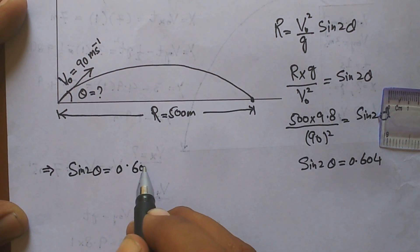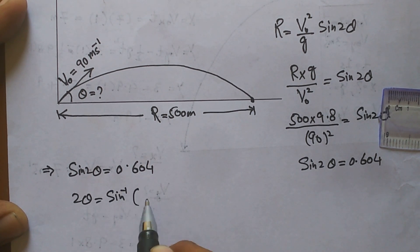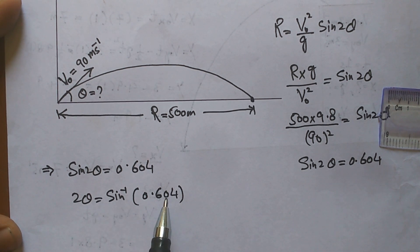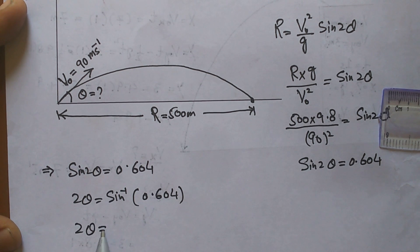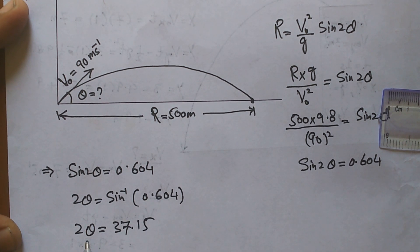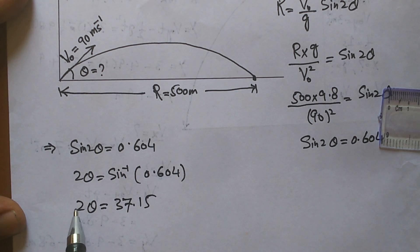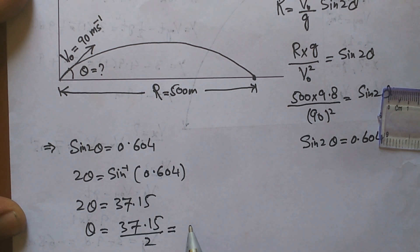sin(2θ) equals 0.604, so 2θ equals sine inverse of 0.604, which gives 37.15 degrees. Dividing by 2, theta equals 18.578 degrees.